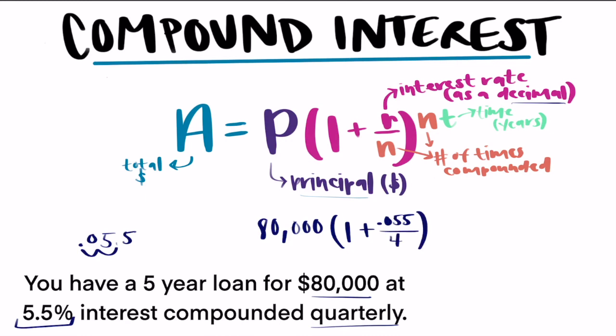And then we're going to raise that to the power of, it says quarterly. So again, we have N is 4. And then T is standing for our years, which it says it's a five-year loan. So 4 times 5, our exponent would become 20.